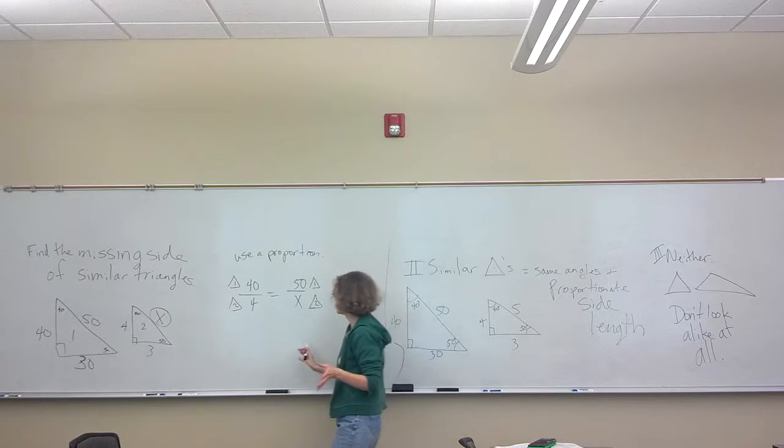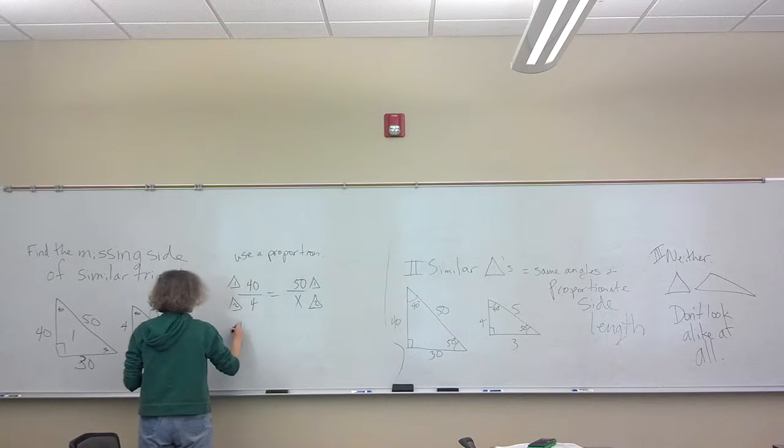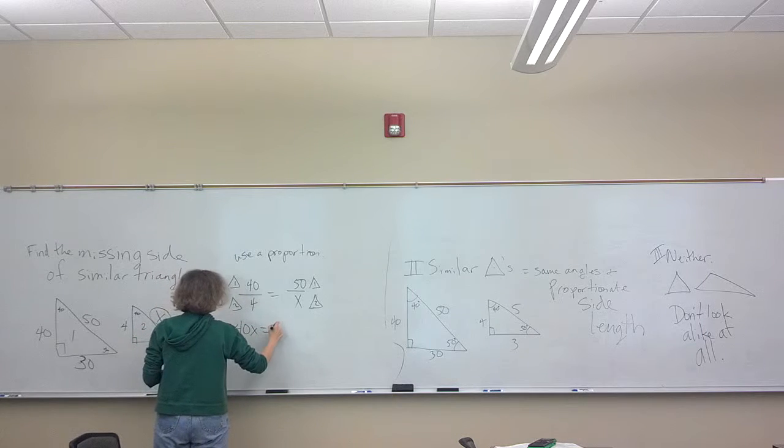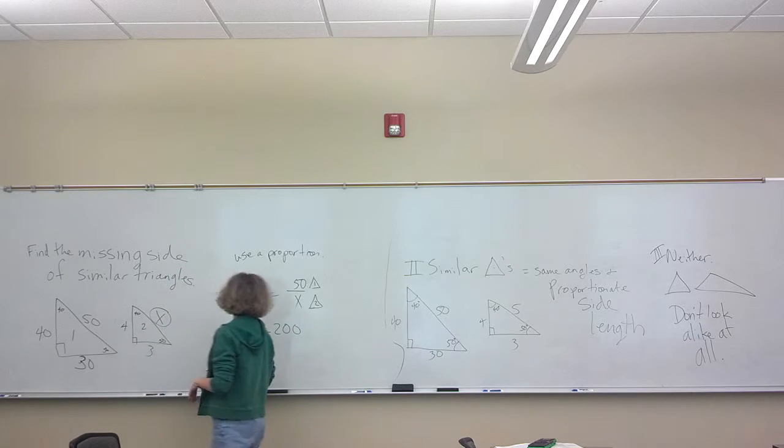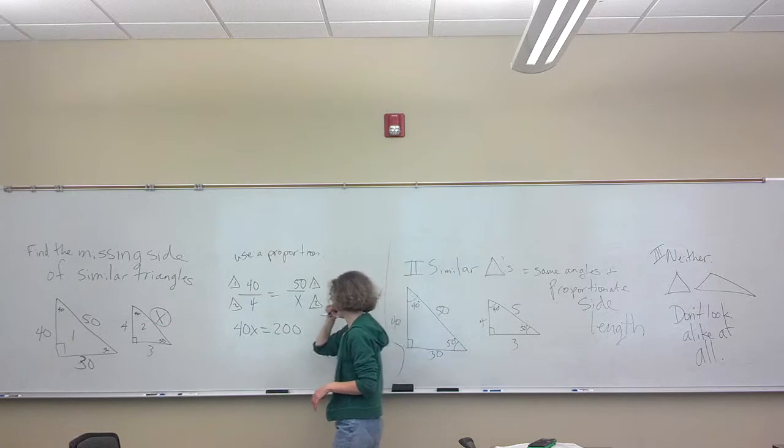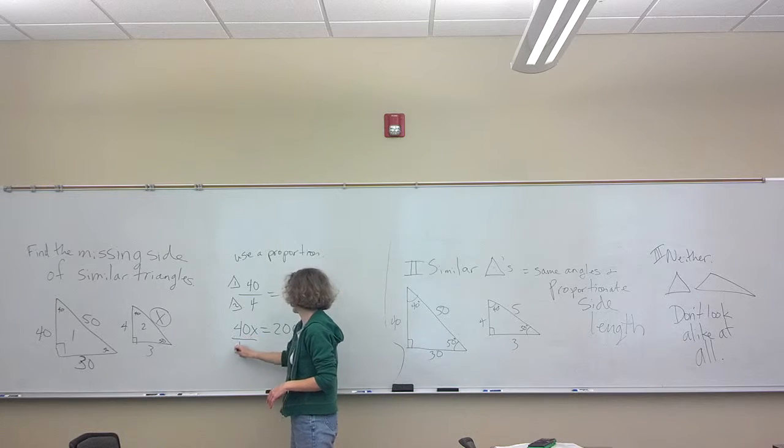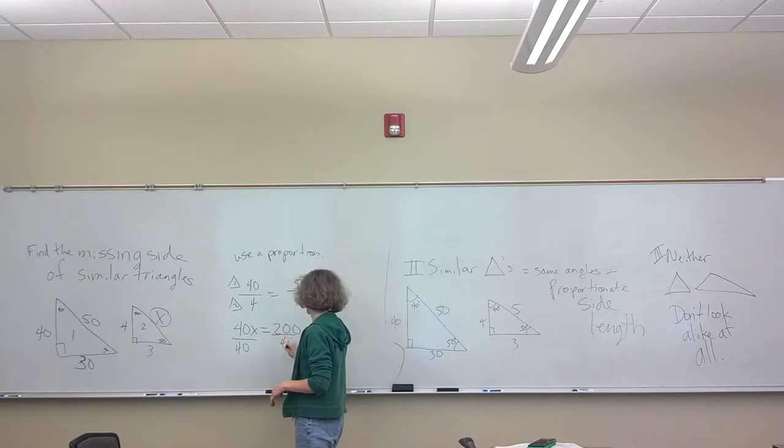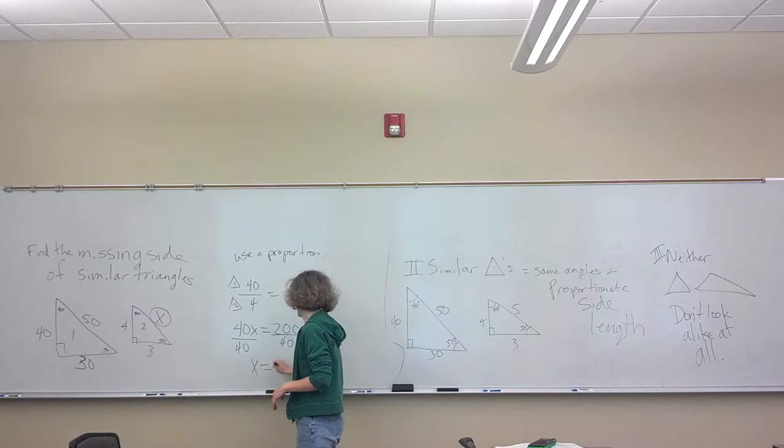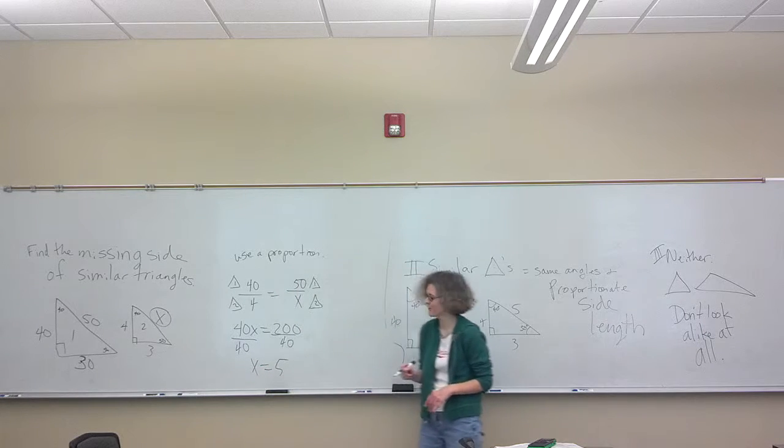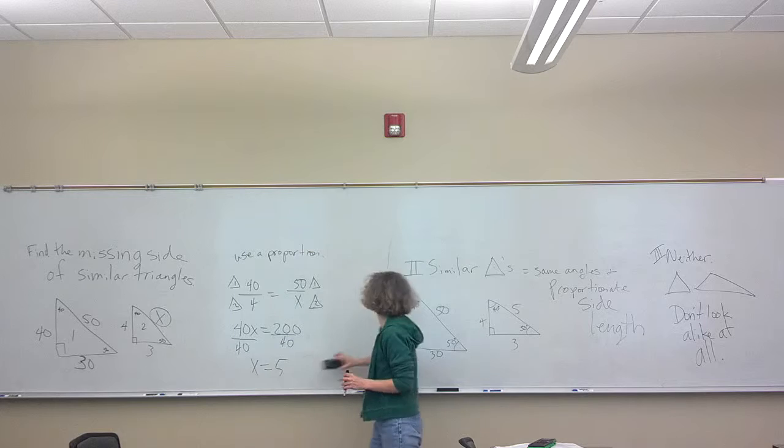Now in your proportion, you just cross multiply and divide what's in front of the X. So we've got 40 times X equals 4 times 50, 200. Divide by 40, and if everything is right, your answer should be 5. And that's how you set up those.